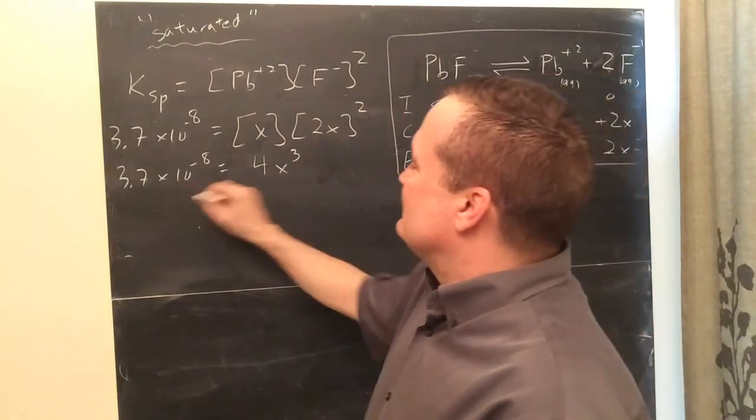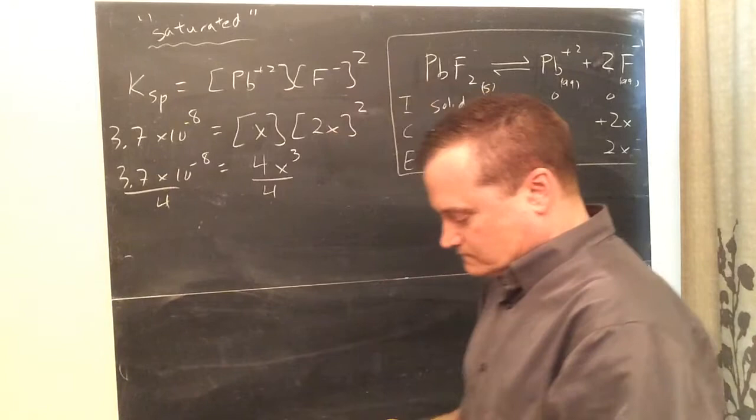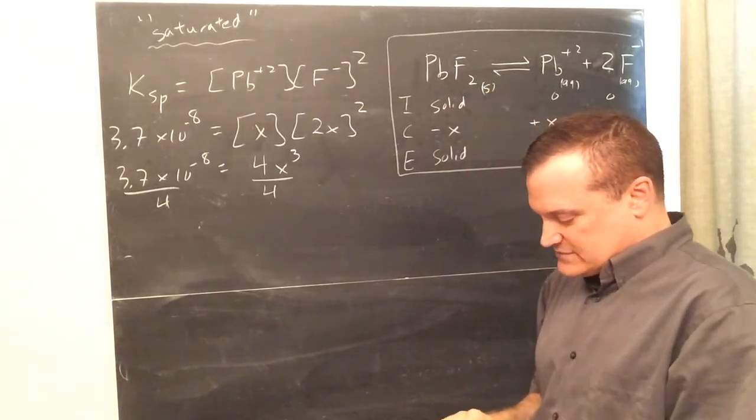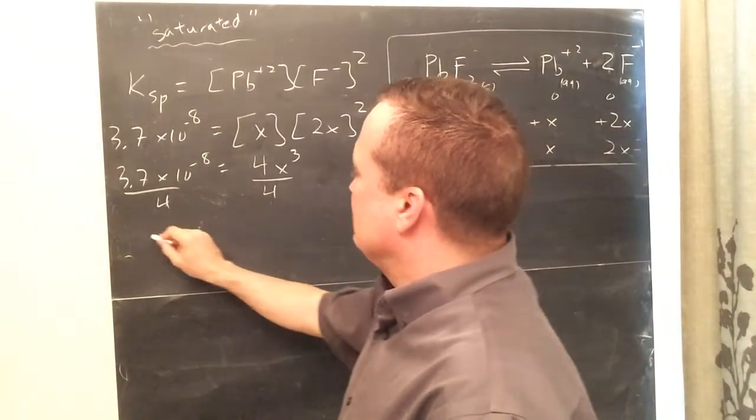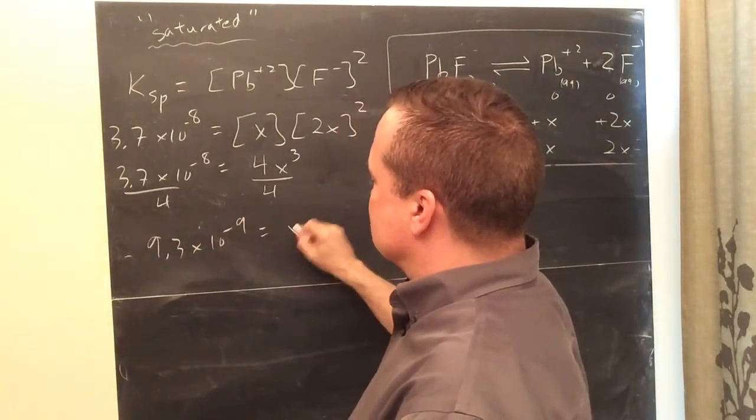Okay, now we've got to divide both by 4, 3.7×10 to the negative 8 divided by 4 is 9.3×10 to the negative 9 equals X cubed.